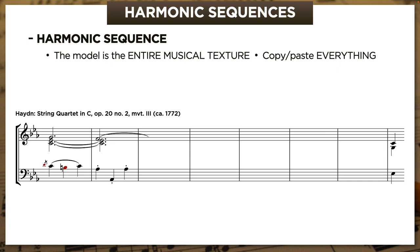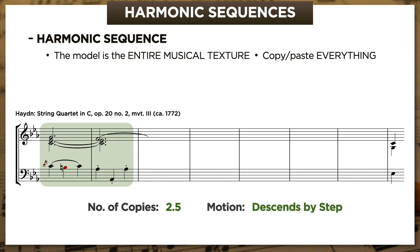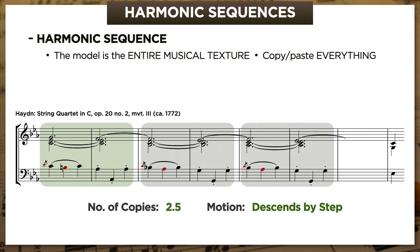These are the first two bars of the trio from Haydn's Op. 20 String Quartet No. 2, and he uses them as the model for a harmonic sequence with two and a half copies. If I know that the sequence also descends by step, I don't even need to see it to know literally every single thing that's going to happen for the next few bars. And in fact, that is literally what Haydn wrote. Once the sequential pattern gets going, it takes over everything that's happening in the music.